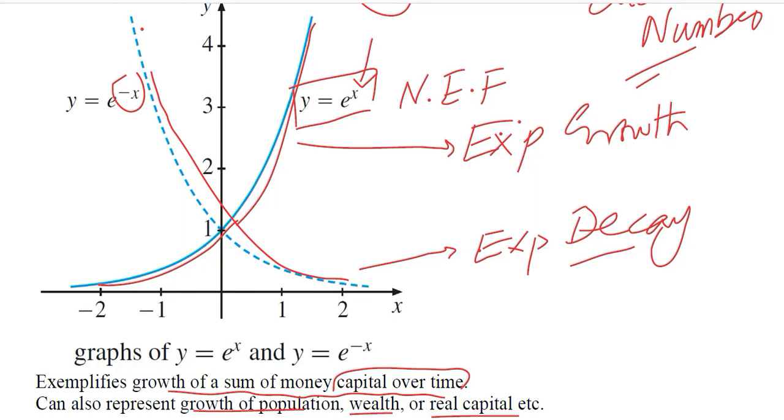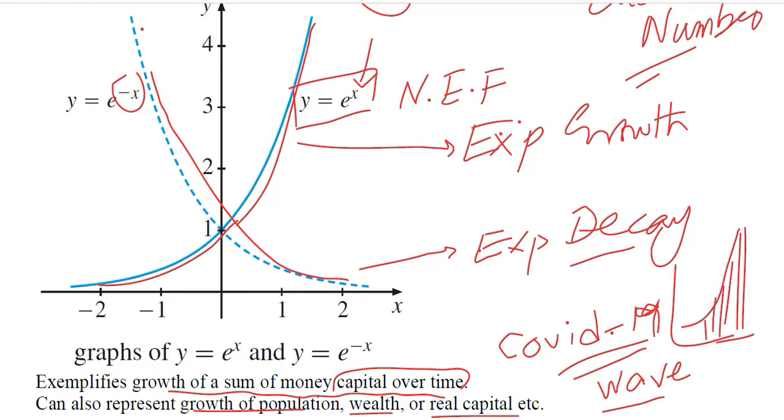And most recently, the growth in the COVID-19 infections is also an example of exponential growth. Because you saw that whenever a new wave of COVID-19 came, it gave rise to a certain increase in the number of infections. And this is another example of exponential growth.